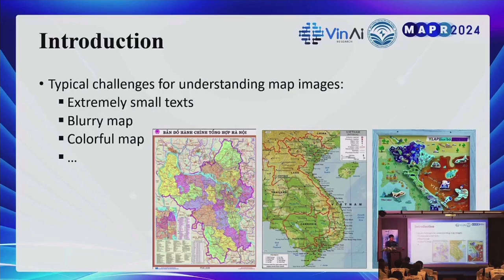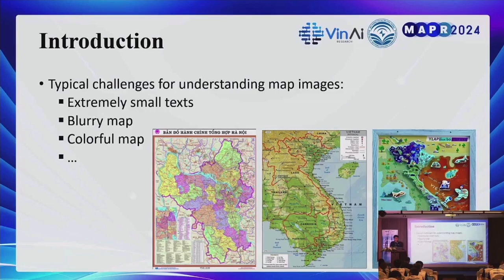There are typical challenges when dealing with multi-resolution maps. The maps often appear in extremely small text, are sometimes blurry, and contain a lot of colors, making it very hard for computer vision technology to extract semantic information from the map images.